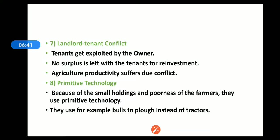For example, bulls are used to plow fields instead of tractors. Old technology is used by Indian farmers because there are small holdings and small, poor land, so there is not enough money or income to use new technologies.